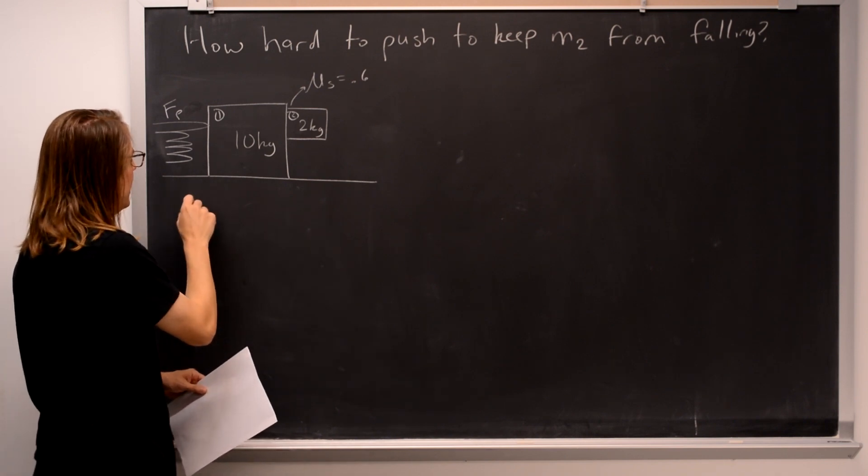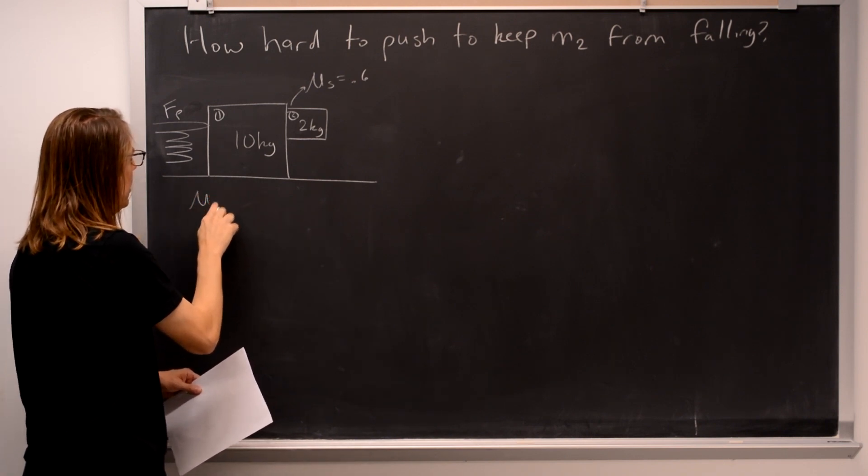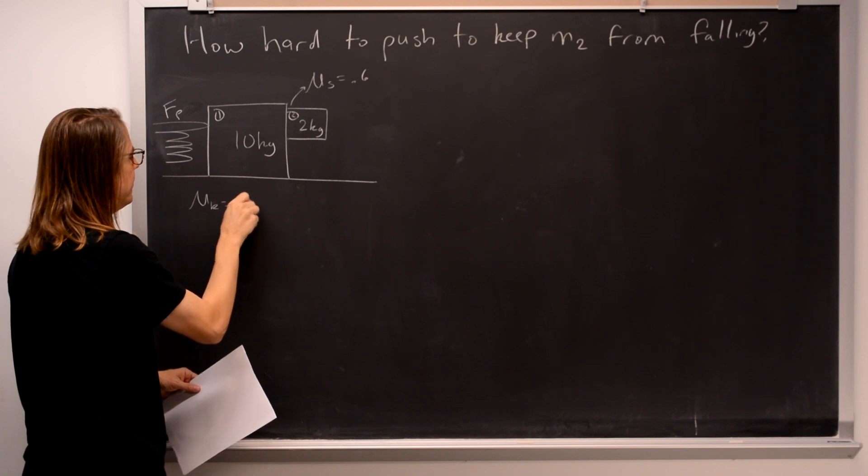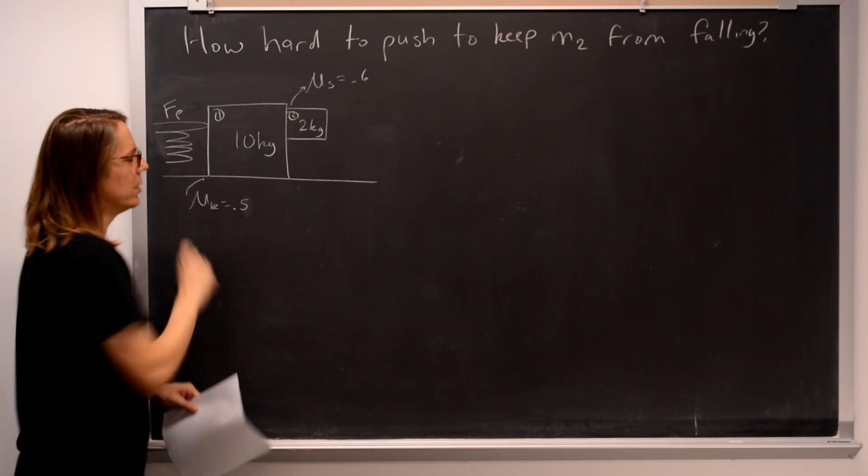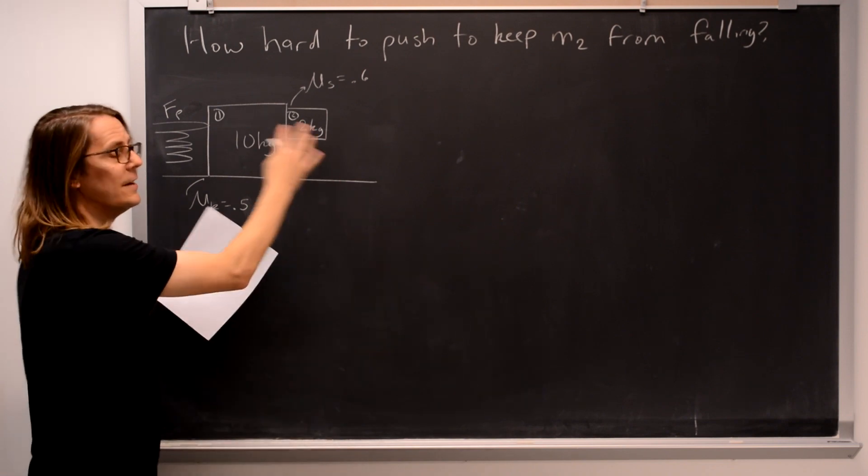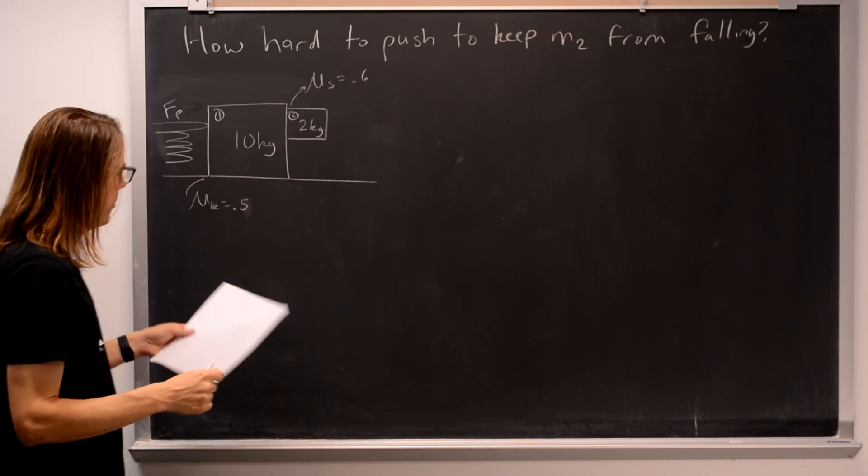And we're going to include kinetic friction here. Mu k is 0.5 for the big box moving on the floor. So that's the idea.